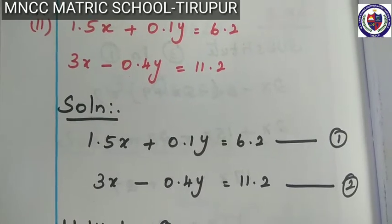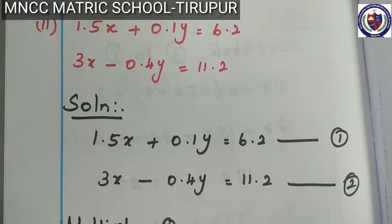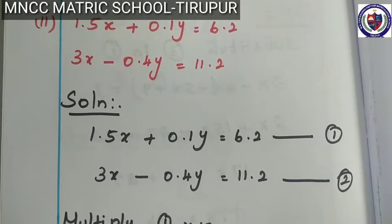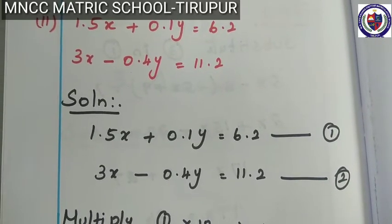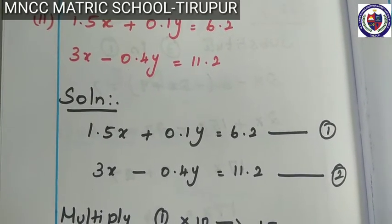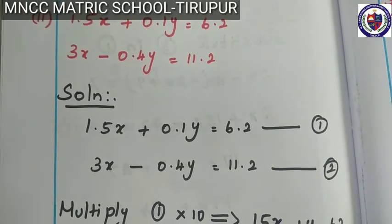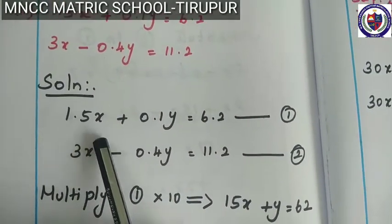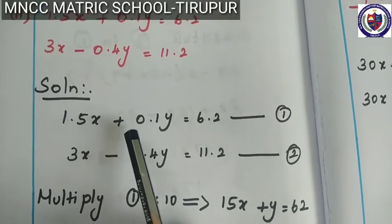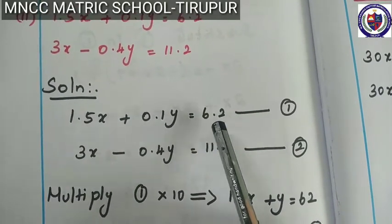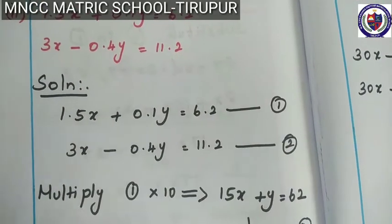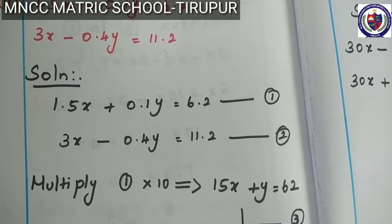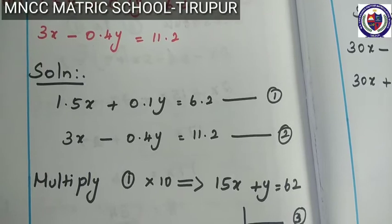Using the same method, the second problem: 1.5x plus 0.1y is equal to 6.2, and 3x minus 0.4y is equal to 11.2. Solution: the first equation is 1.5x plus 0.1y is equal to 6.2 - this is equation number 1. The next equation: 3x minus 0.4y is equal to 11.2 - this is equation number 2.